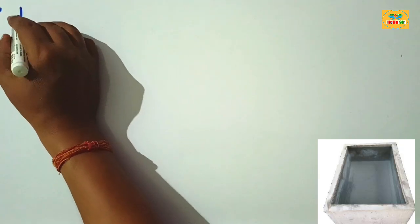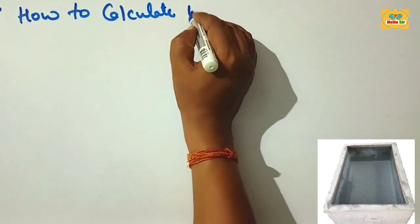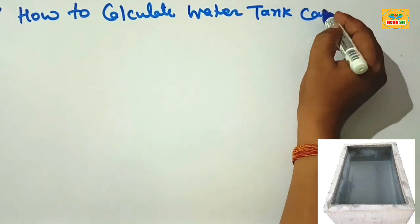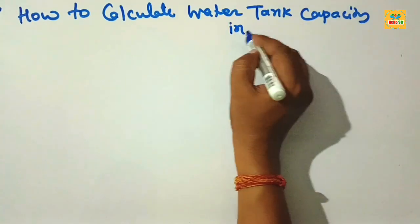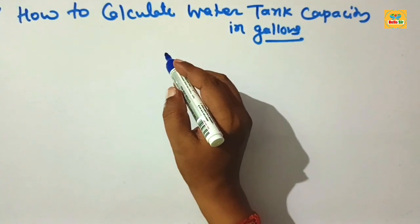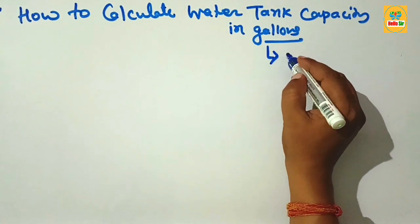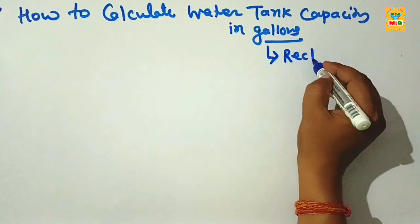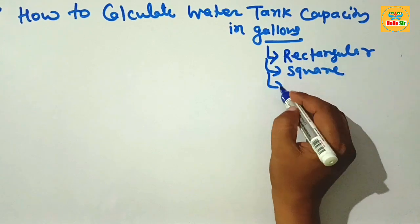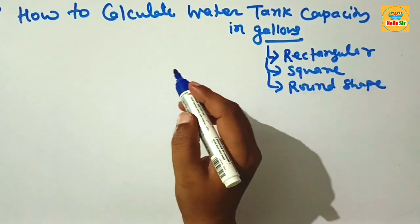Today in this video you will learn how to calculate water tank capacity in gallons. You have to find out the volume of water tank capacity in gallons. Water tanks come in different shapes — like rectangular shape, square shape, or round shape — and we will look at how to calculate the volume of a water tank capacity in gallons.